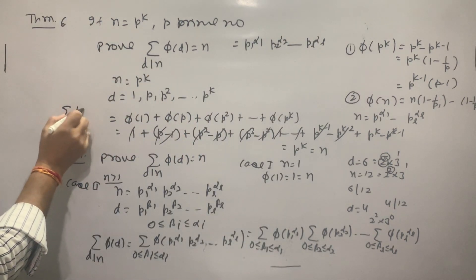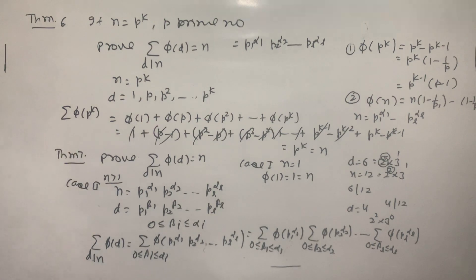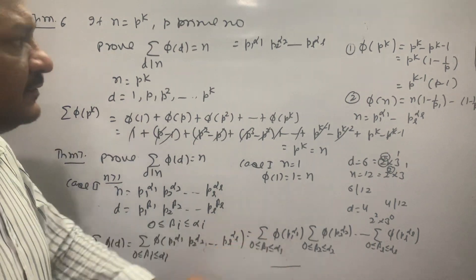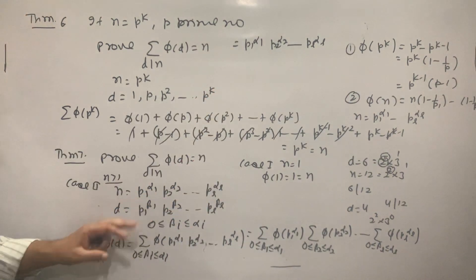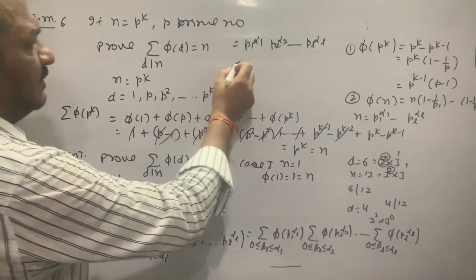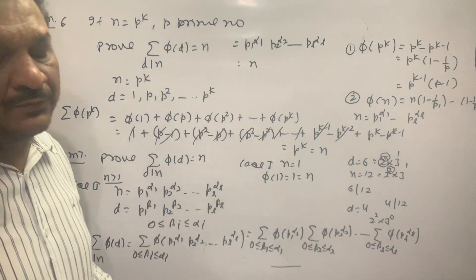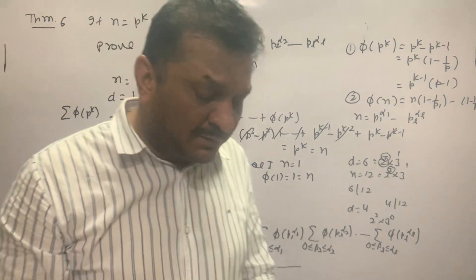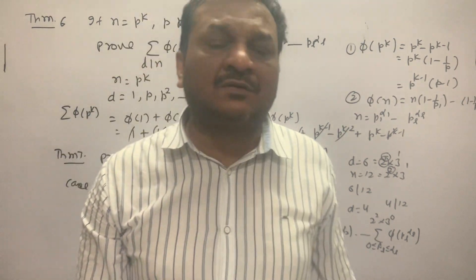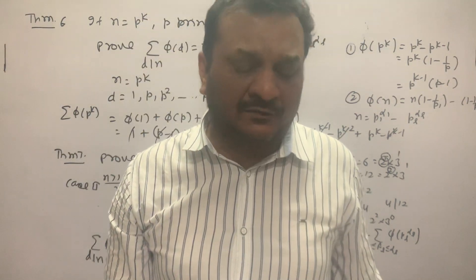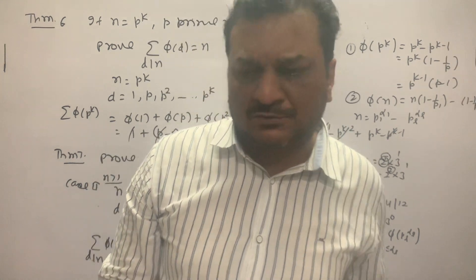So each summation phi(p^k) gives the value p_i^alpha_i, and the total product gives us n. That completes the proof. Next video I'll put examples. Thank you very much.